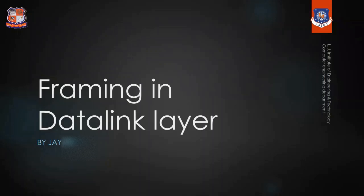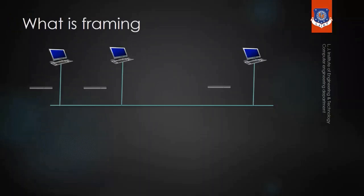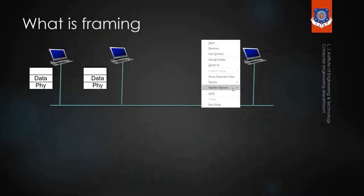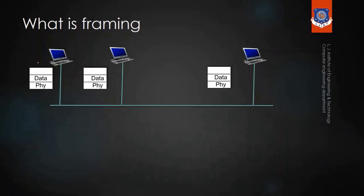Now let's understand what is the meaning of framing. As you can see in this figure, there is device A, B and C connected via a single line. Suppose that device A wants to send data to device C. When device A is sending any data, in the data link layer frames will be generated.